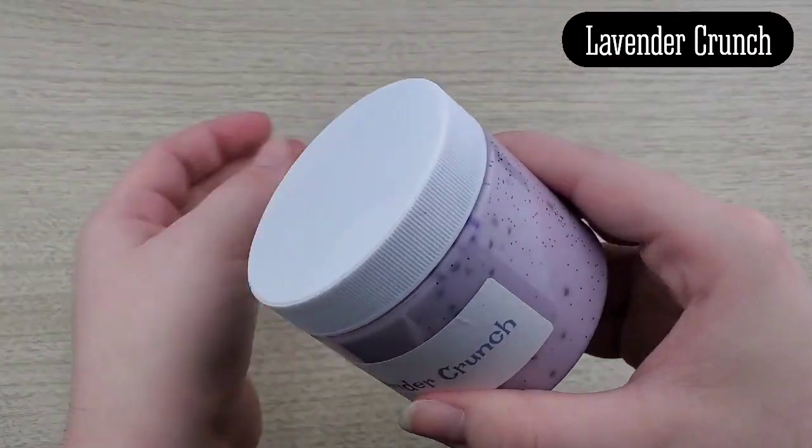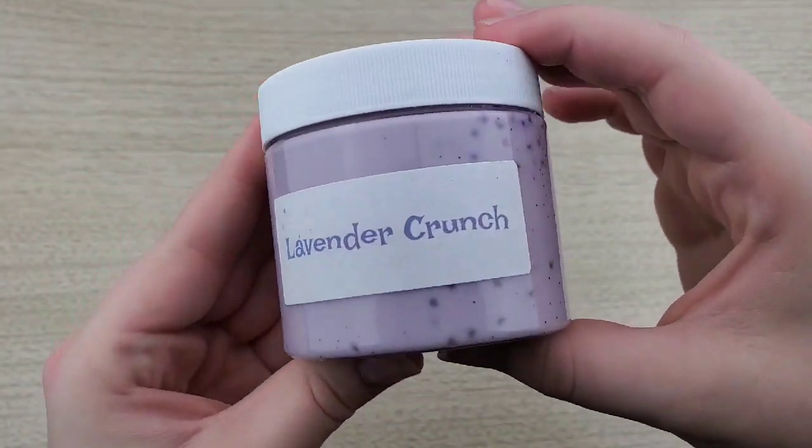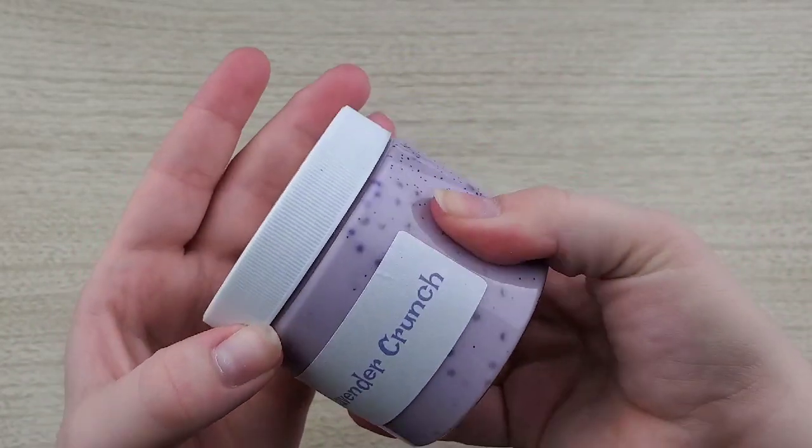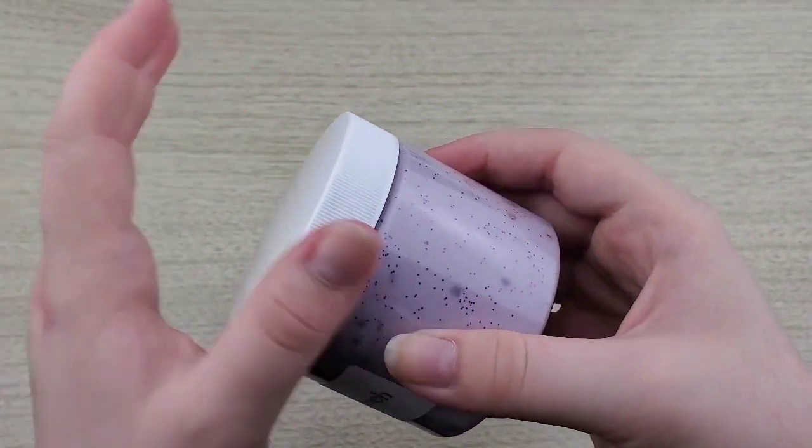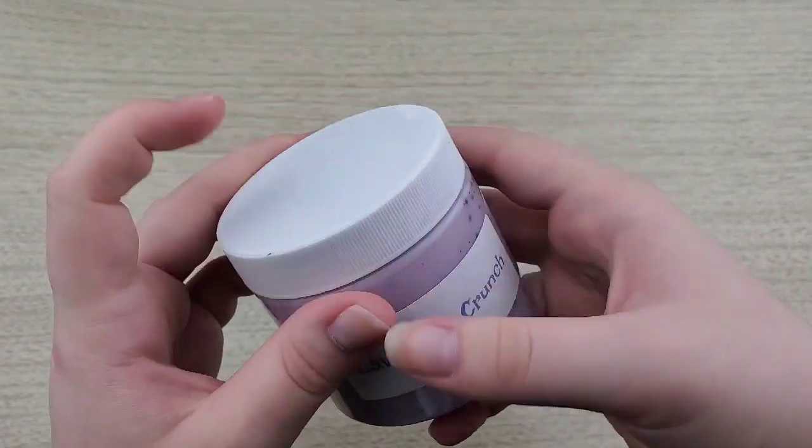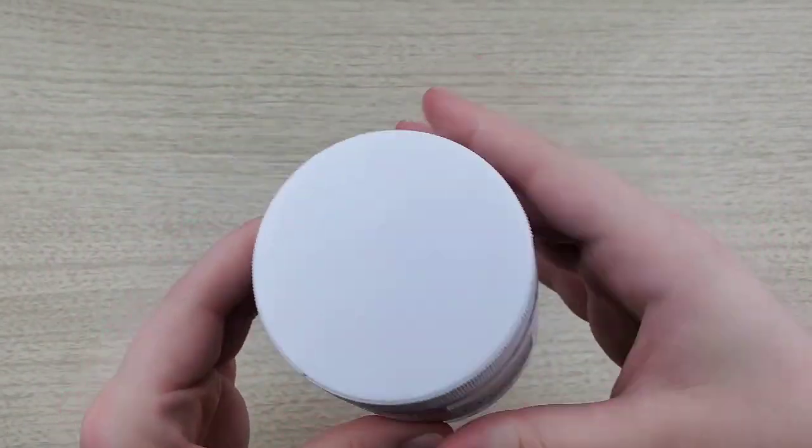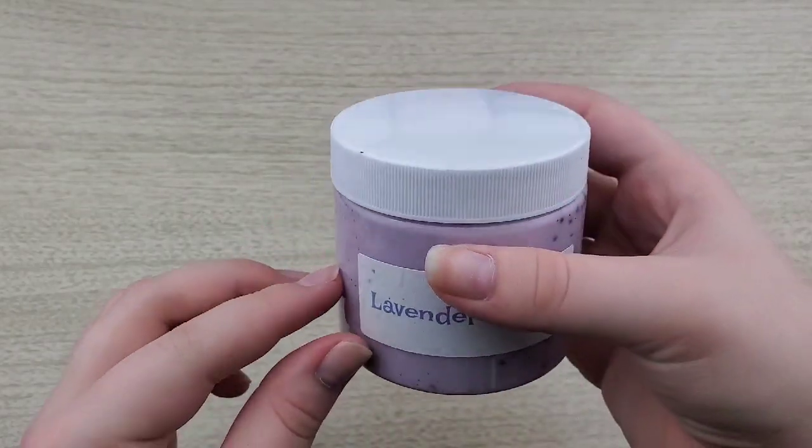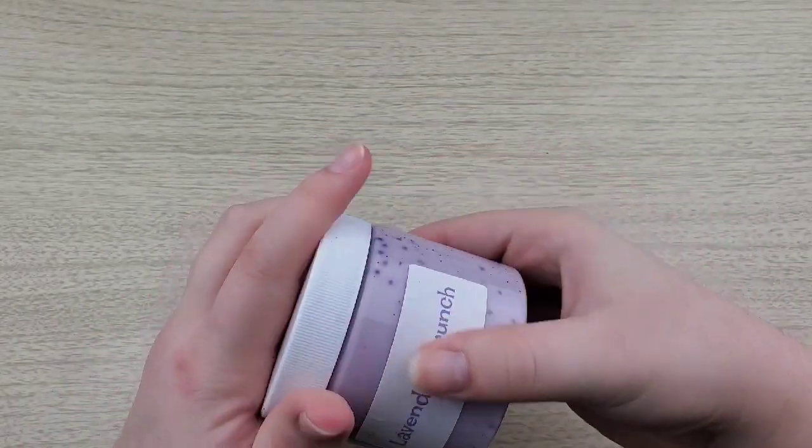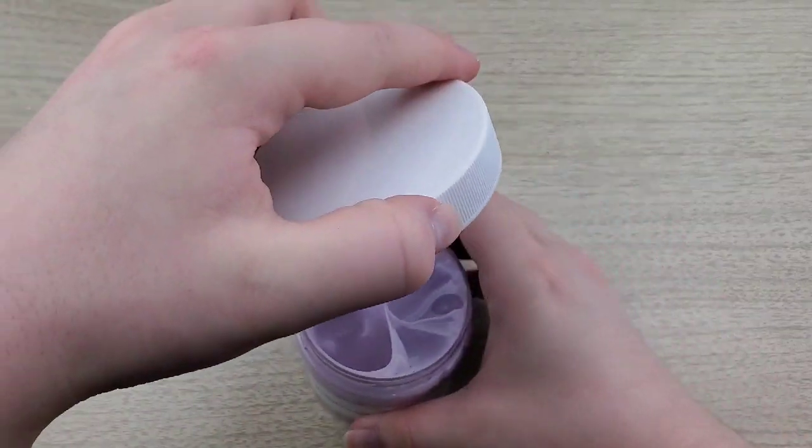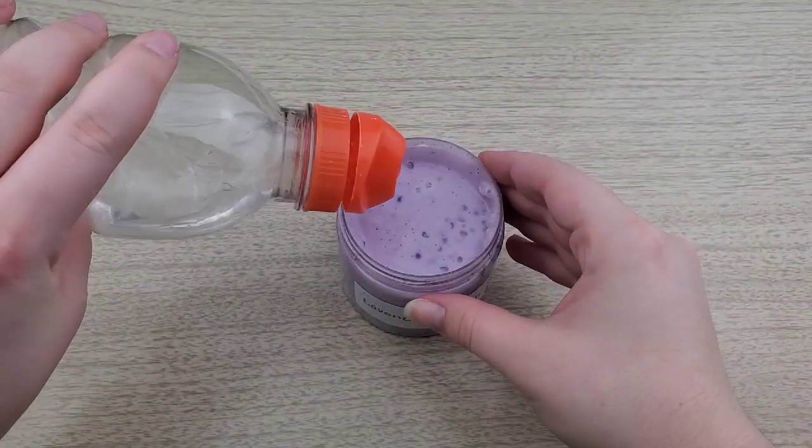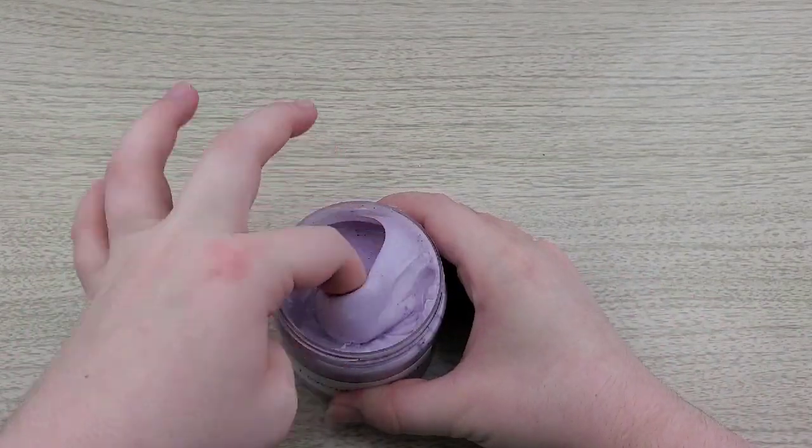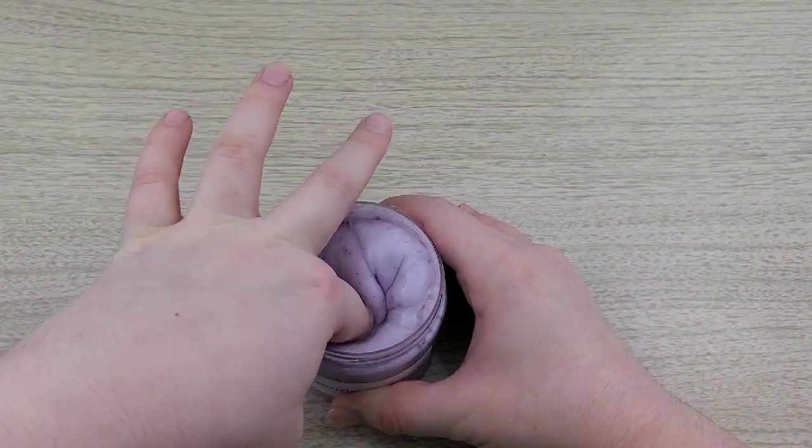So moving on, they sent me a multitude of slimes. This first one is lavender crunch. Now on the website I will say it is called a crunchy slime. A crunchy slime could be pretty much anything that makes a bubble pop or a crunch.